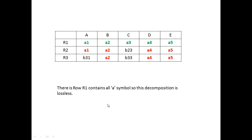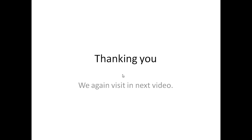After updating the table, row R1 contains all a-values, so from the algorithm we say that this decomposition is lossless. To summarize: if decomposition is lossless, after natural join we get back the original table. If decomposition is lossy, after natural join we cannot return to the original table. If you like this video, please subscribe. Thank you.